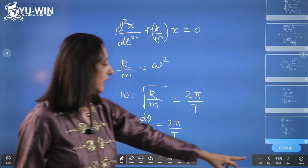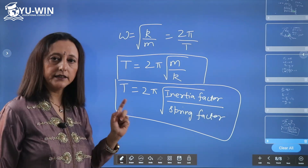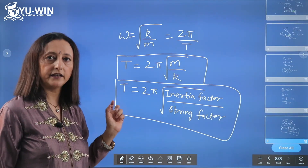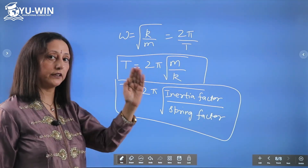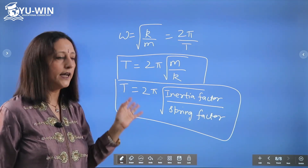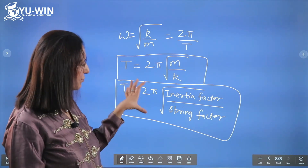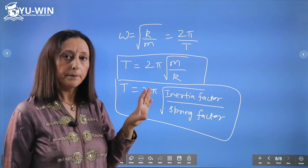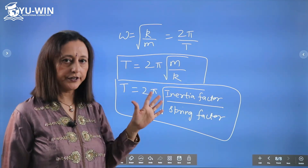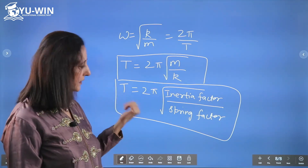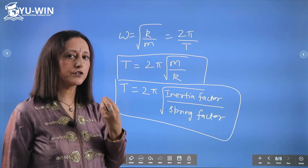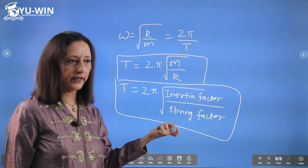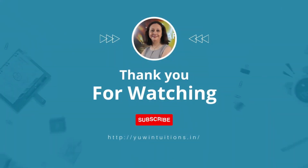We will continue in the next video about energy considerations — how conversion of energy takes place from potential to kinetic, total energy, and various graphs. All of you must study simple harmonic motion thoroughly, because this is a topic needed repeatedly in most chapters in 12th and 11th. It is the basic foundation of wave motion. It's a small, sweet, scoring, and easy chapter — thank you.